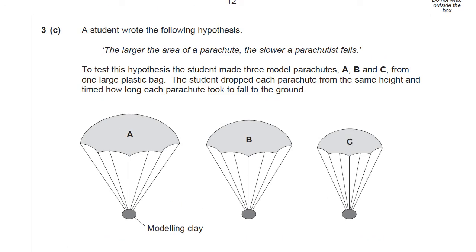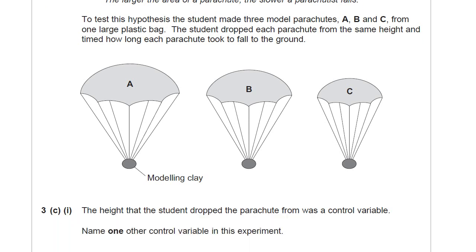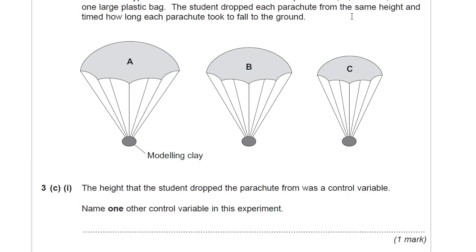Okay, moving on. A student wants to investigate this idea, and he writes the following hypothesis: The larger the area of the parachute, the slower the parachutist falls. To test this hypothesis, the student made three model parachutes. The student dropped, oh sorry, from one large plastic bag. The student dropped each parachute from the same height and timed how long the parachute took to fall. So the question is not really about terminal velocity, it's about the experiment. The height the student dropped the parachute from was one control variable, and you're told that up there, the same height. Remember, that's what controls are, things we keep the same in an experiment. So you've been given that one. You need to think of one other control variable in the experiment.